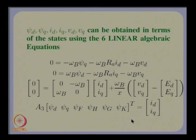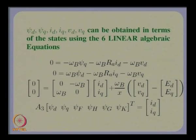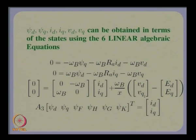The variables ψ_h, ψ_g, and ψ_k appear here. This is how we obtain all the equations: a mixture of six differential equations and six algebraic equations. The algebraic equations allow us to write V_d, V_q, I_d, I_q in terms of the states. Since V_d, V_q, I_d, I_q are required by the differential equations, and are expressible in terms of the states ψ_f, ψ_h, ψ_g, ψ_k, δ, and ω, it is a fairly straightforward matter to substitute and eliminate them from the differential equations.